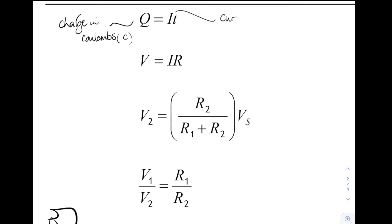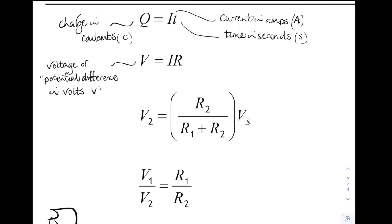So Q is charge. It's measured in coulombs. I is current. Measured in amps. T is time. Measured in seconds. V is voltage. Otherwise known as potential difference. Measured in volts. And again we've got I for current. And R is resistance. Measured in ohms.